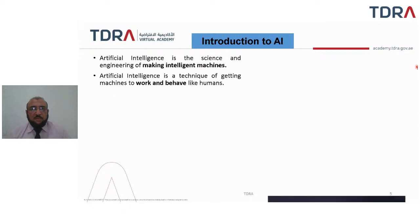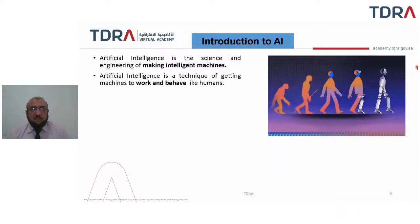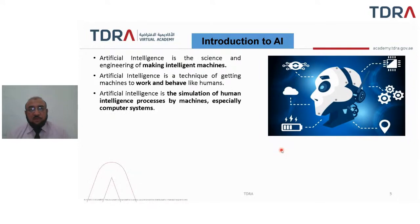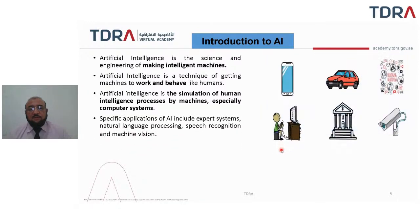Introduction to AI: basically, artificial intelligence is the science and engineering of making intelligent machines. By inducing human intelligence to some extent into machines, they become intelligent, and they act and react like humans. AI is a simulation of human intelligence by machines, especially computer systems. Specific applications of AI include expert systems, natural language processing, speech recognition, and machine vision.